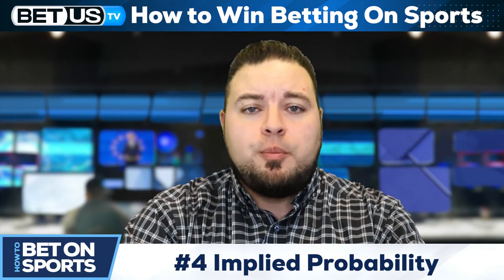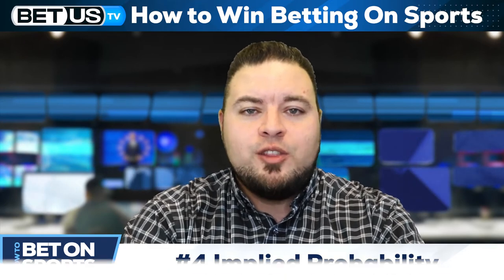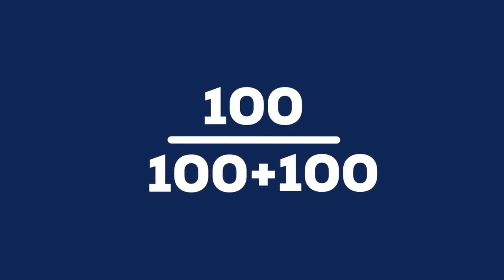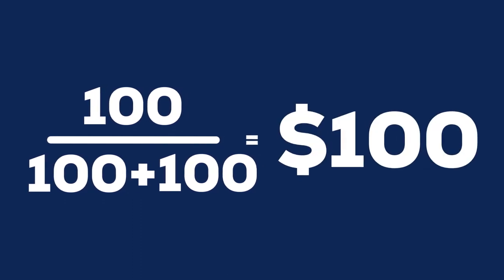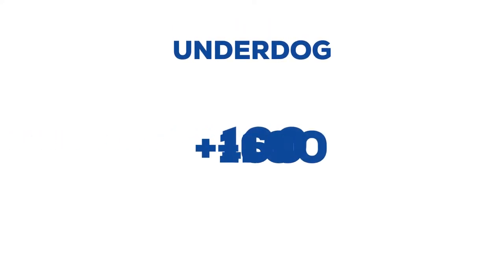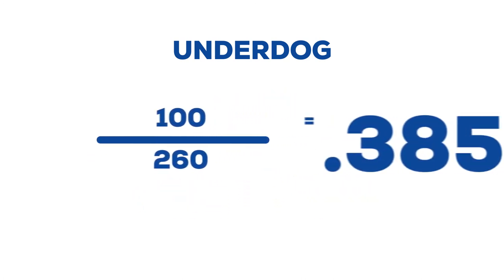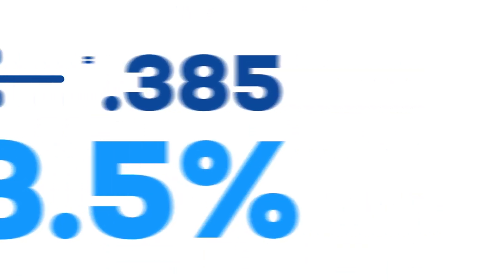Aside from a payout, odds also show implied probability. How can you use the different odds to determine the probability of an outcome in sporting events? There are two different formulas to determine this when it comes to American odds. For underdogs, or the team with the plus sign in front of their number, you take 100 divided by the positive odds plus 100. Those positive odds plus 100 would equal your total payout on a $100 bet. For example, if an underdog is plus 160 to win outright, take 100 divided by 260, and that gives you .385, which means the sportsbook views the underdog as having a 38.5% chance to win the game.